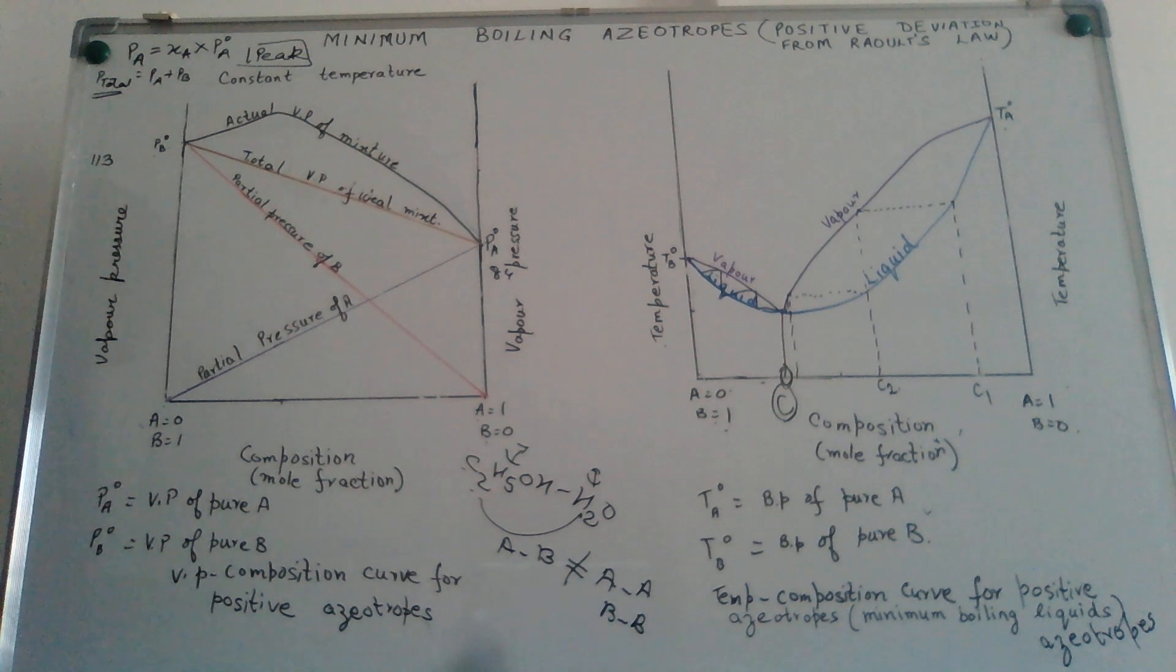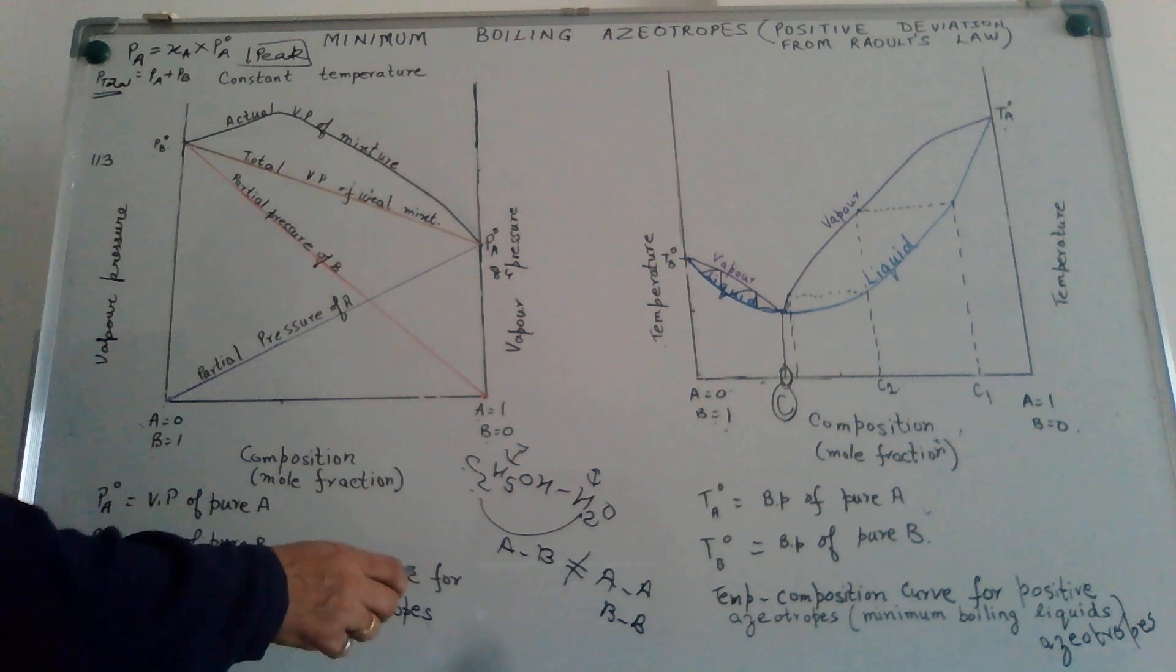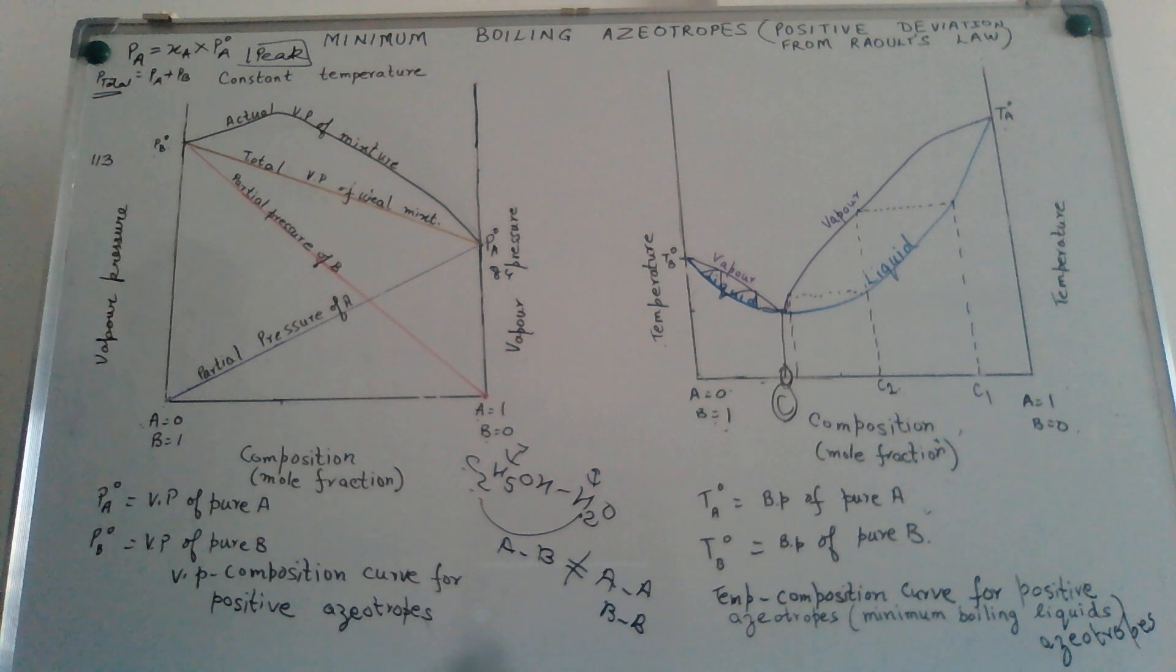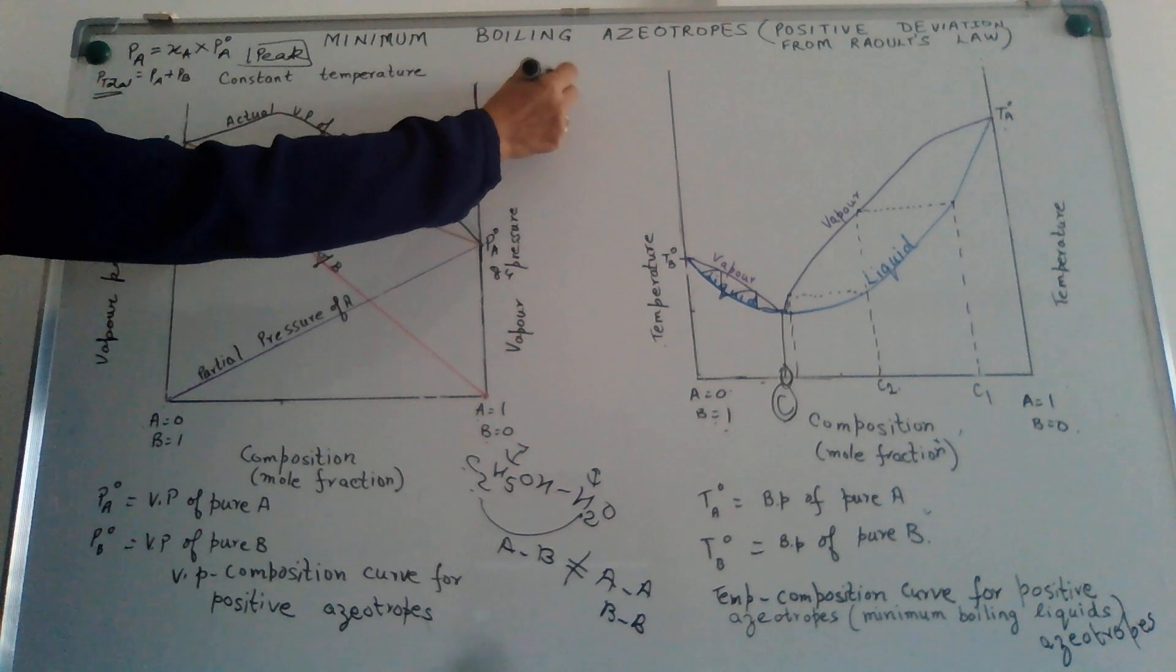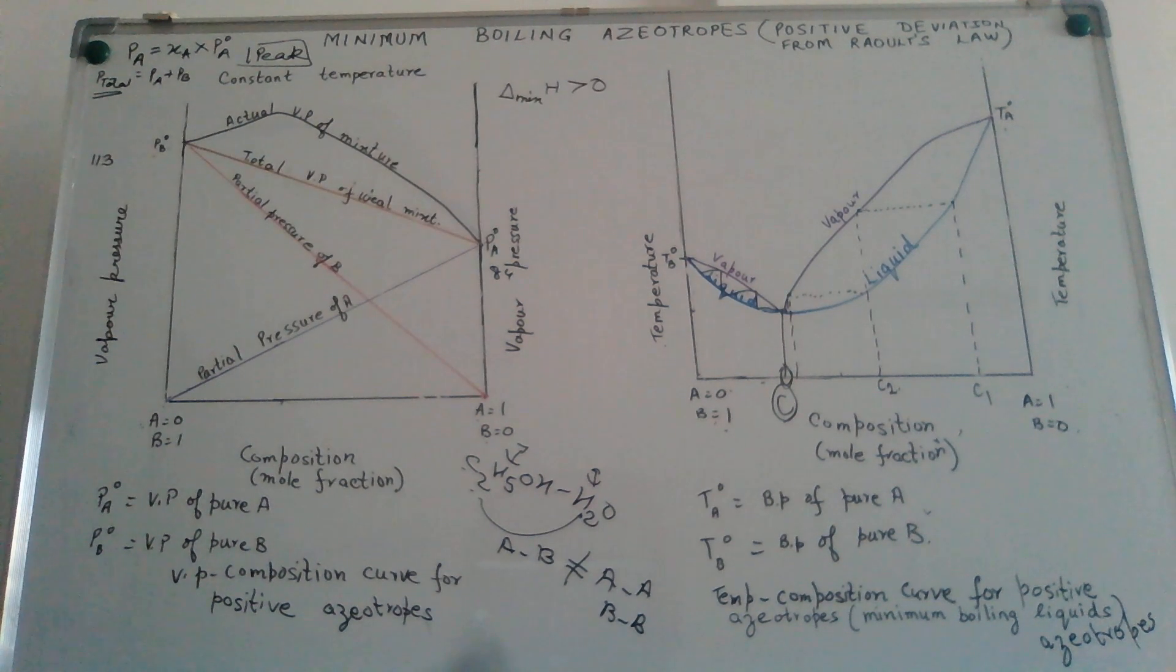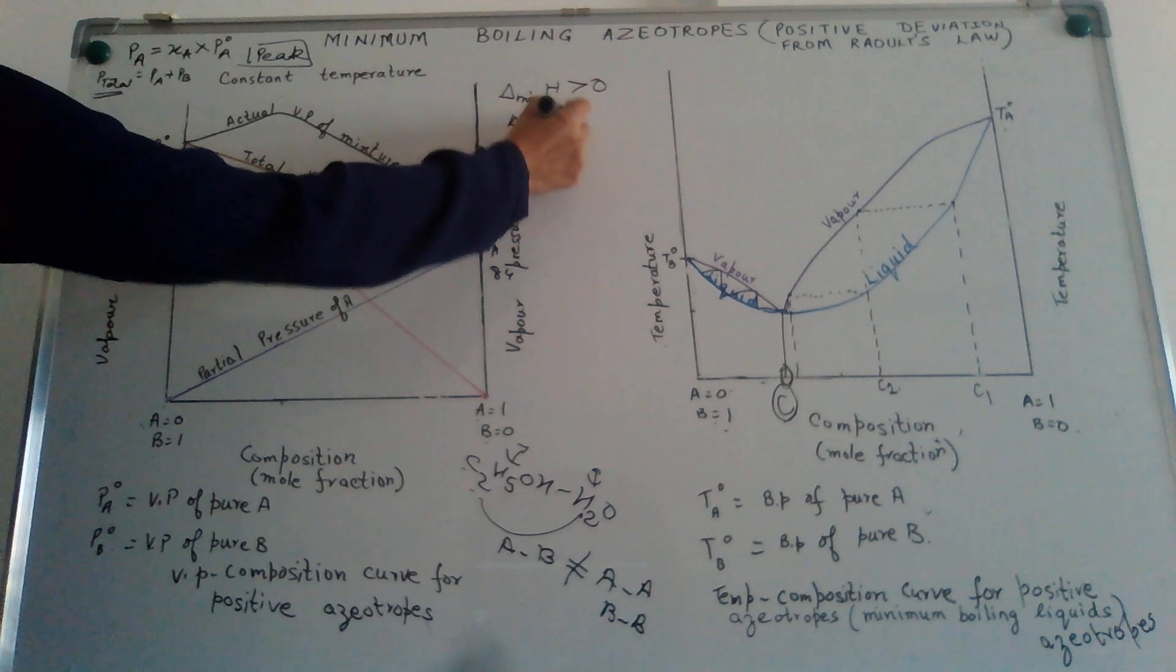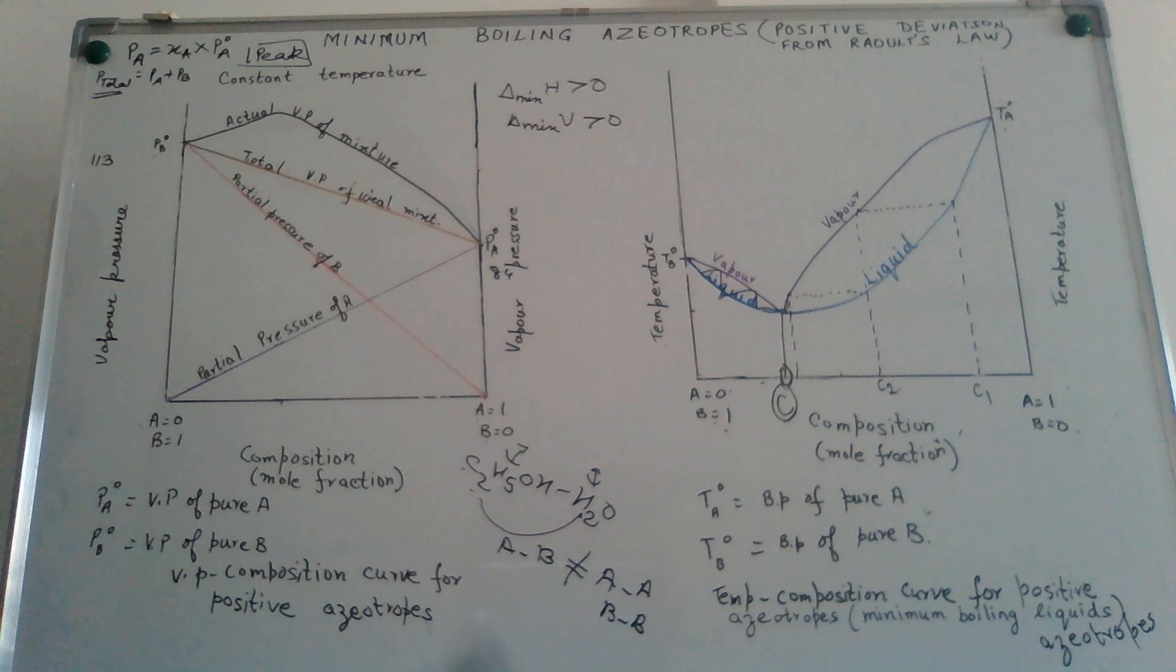Now, that means here there will be a change in enthalpy as well as a change in the volume of the mixture when these are mixed together. We are talking about positive deviations, what will be the change in enthalpy? Enthalpy of the mixture will become greater than zero. In other words, the heat is absorbed when such type of liquids are mixed with each other. That is why you will find that when you mix alcohol with water, the test tube feels a bit cold.